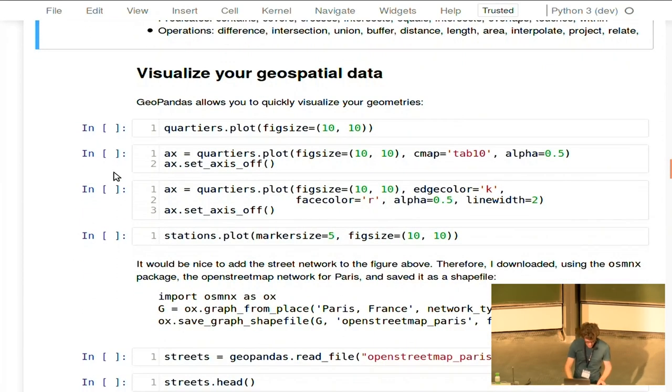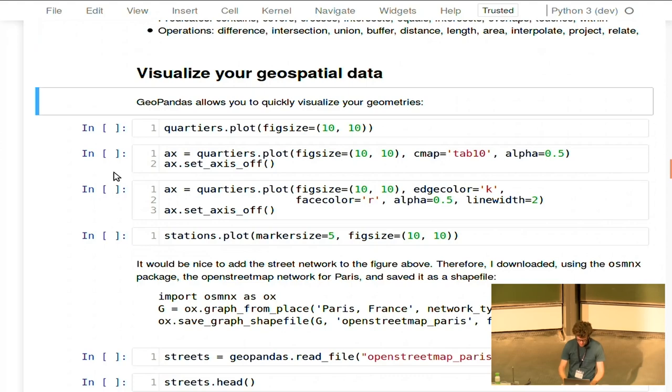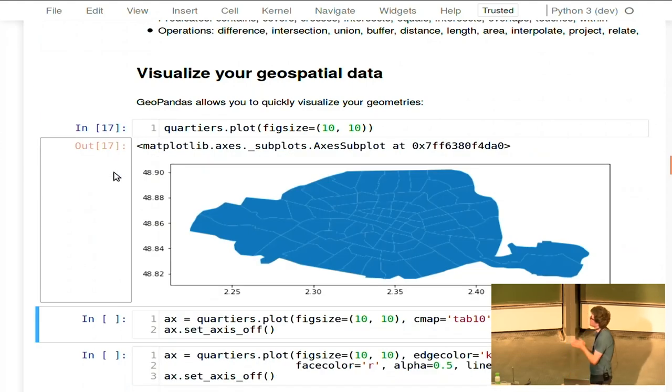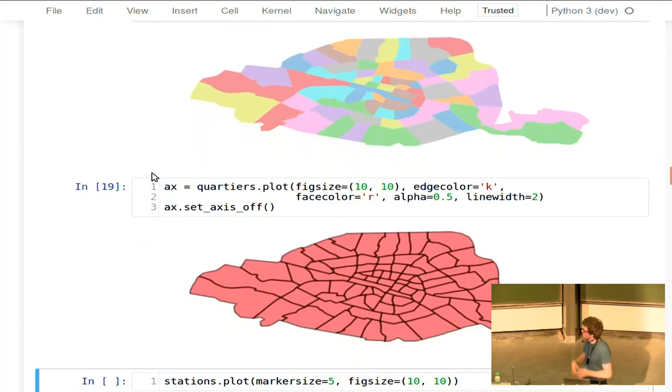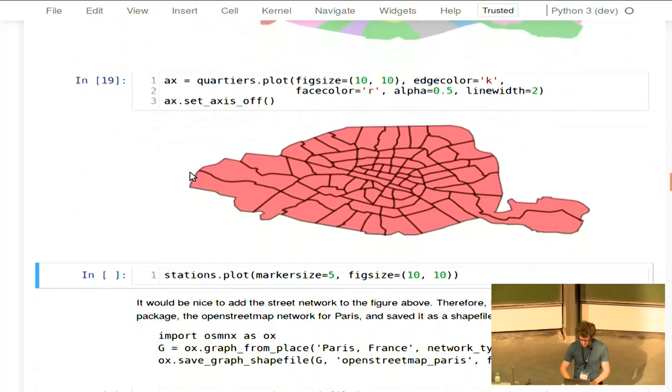Another thing you can do with GeoPandas is quickly visualize your data. For example, if I just plot the different quartiers, here you see, it's maybe not very visible on that line, on the screen there, with all the different polygons. And then there are some options to tweak those figures, for example, I want to give them some random different colors, or some face colors, and edge colors, some alpha. It's matplotlib figures, so you can just also, afterwards, adjust them just like a matplotlib figure.